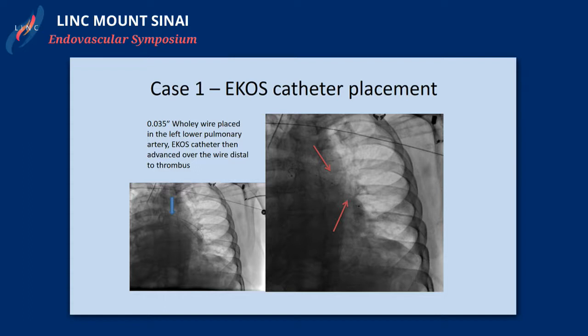The thought process was to go ahead and start catheter-directed thrombolysis. We placed bilateral EKOS catheters over all three guidewires selectively into the clot. It's important to note that you can use regular catheters — it doesn't have to be an EKOS catheter. In this particular case, the decision was made to use the ultrasound capability by placing the ultrasound into the thrombus, giving us the option of using less lytics.